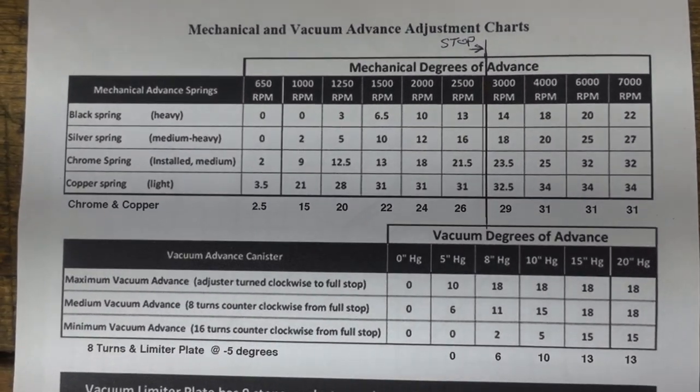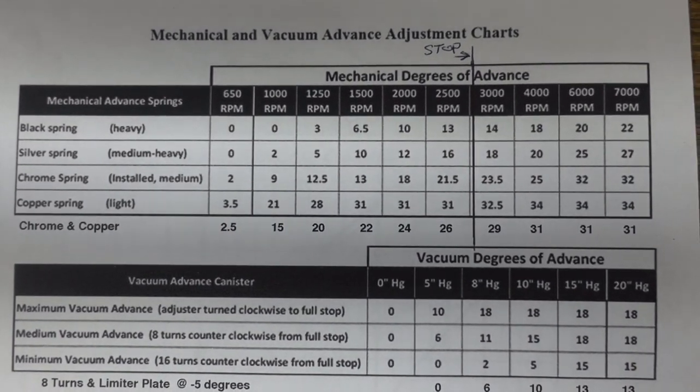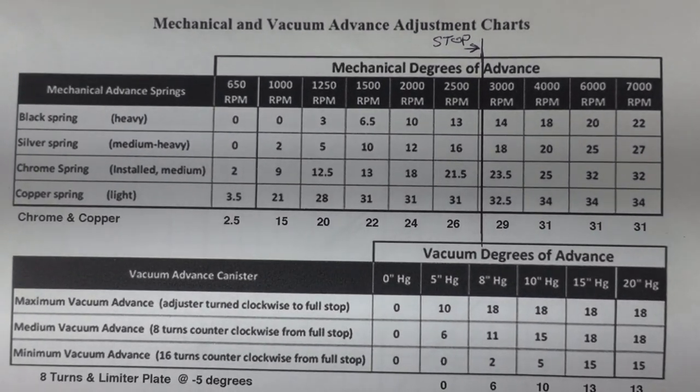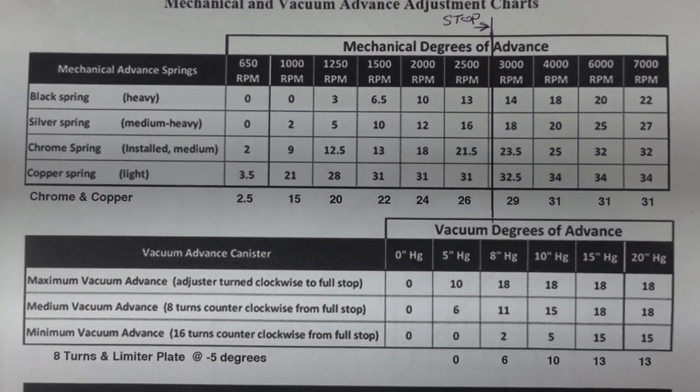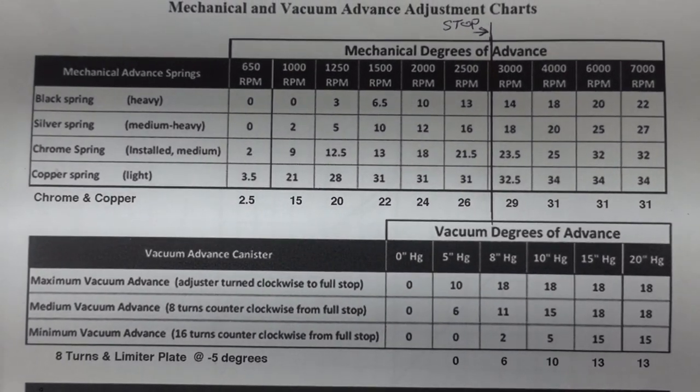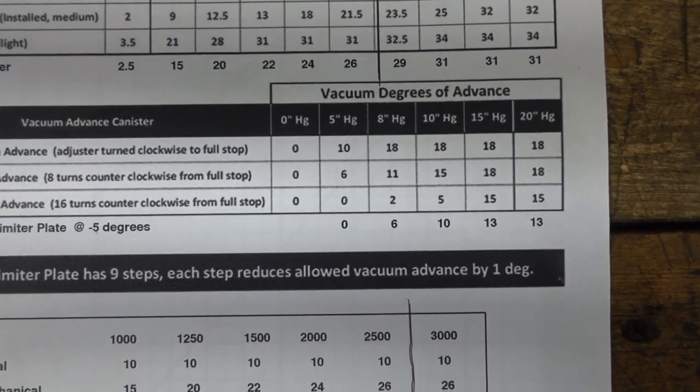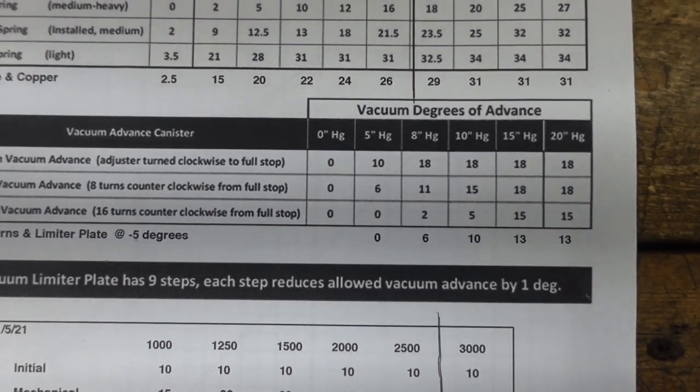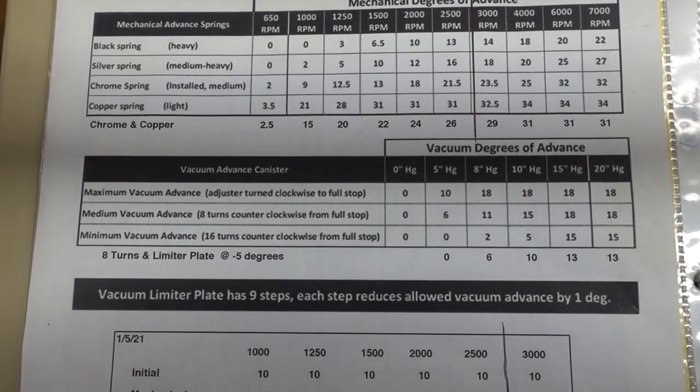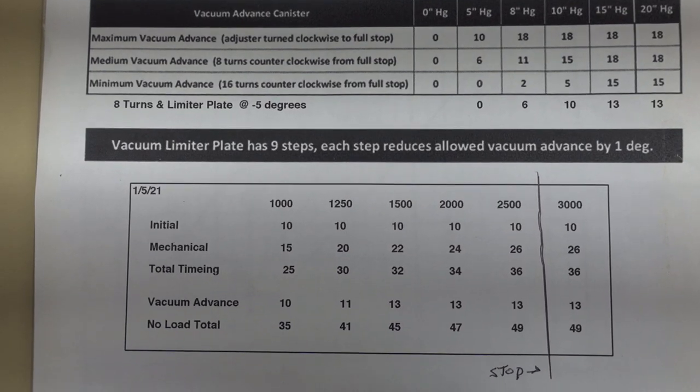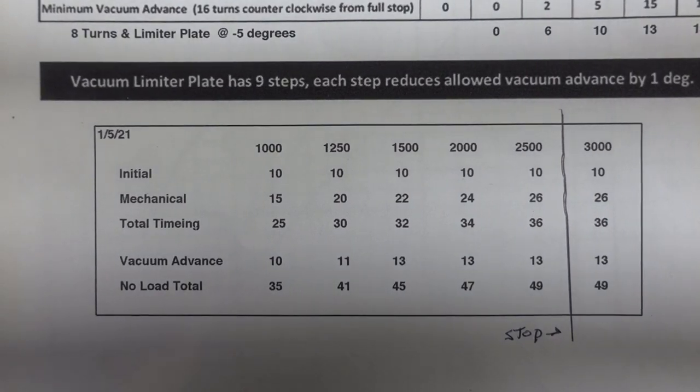On my car here, I'm running 26 degrees of mechanical advance in the distributor. And then I've got 10 degrees set on the balancer, so that gives me 36 degrees of total advance between where it's set on the balancer plus the mechanical inside the distributor. And then I add another 13 degrees on top of that with vacuum advance. Here's that spec sheet that came with the Fast distributor. And at the bottom of it, being a computer kind of guy, I typeset a little box that has the advance that I wound up with.